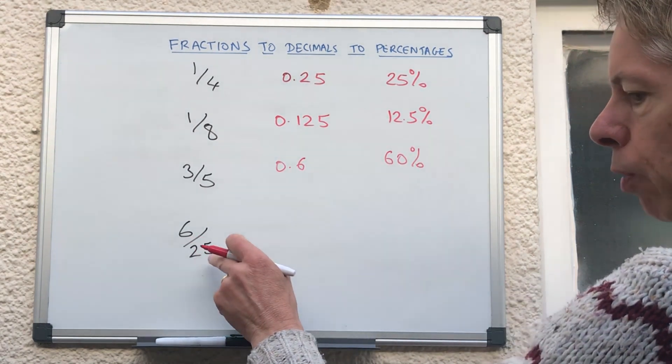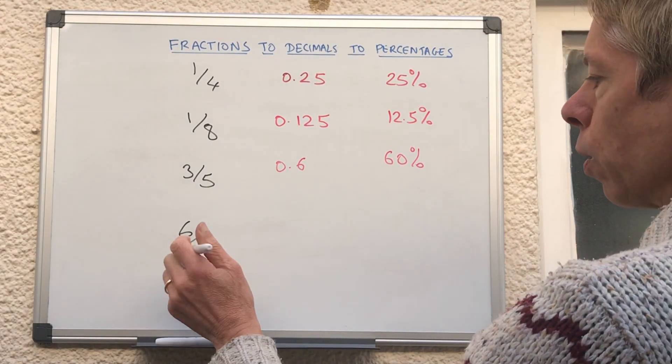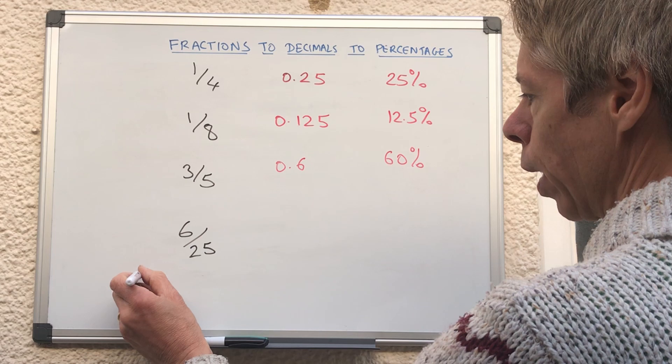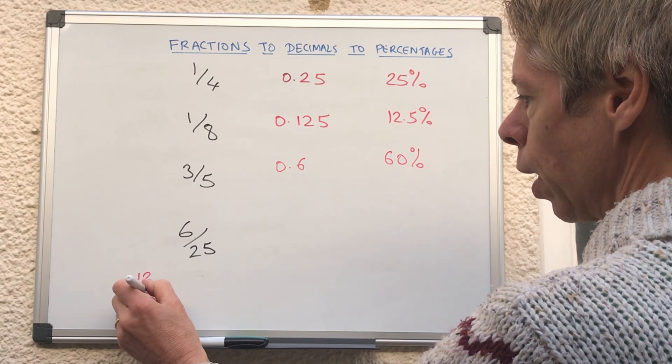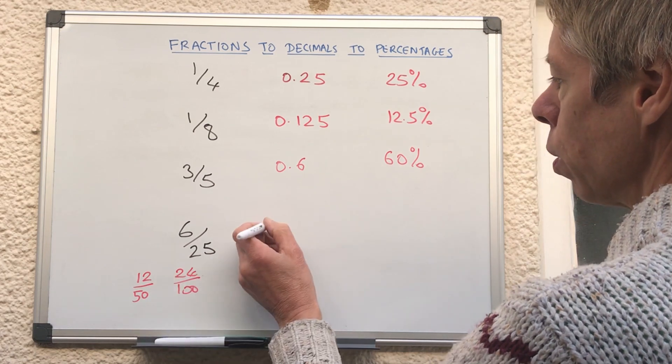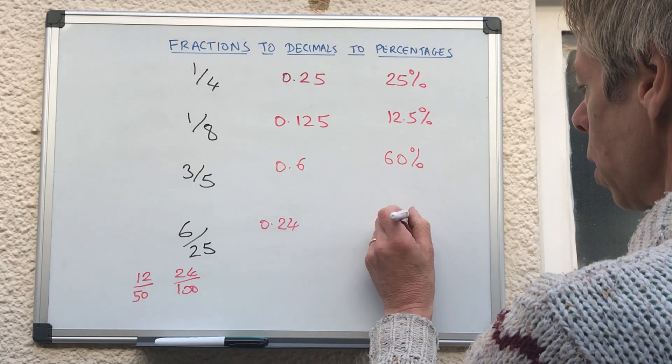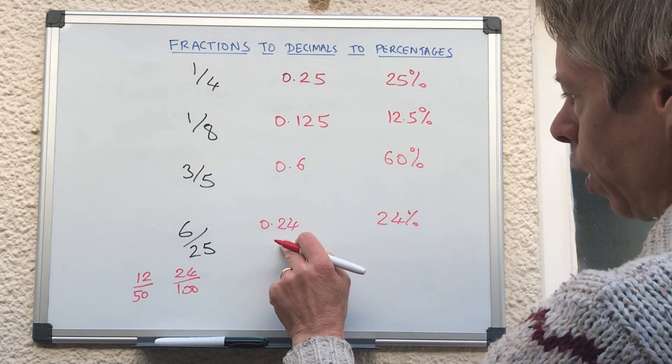We didn't really cover this in today's video, but we've got to get that out of 100 of course, so 6 25ths would be 12 out of 50, we're doubling, and that would be 24 out of 100, so 0.24, or we might have said, 24 out of 100, that's 24%, and then we can go back to 0.24.